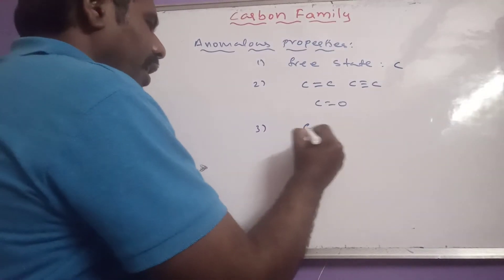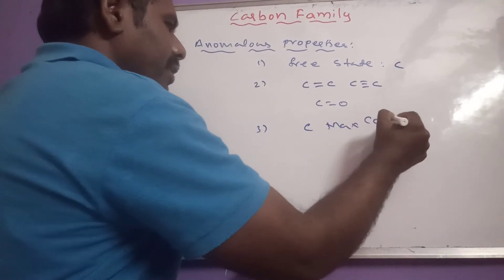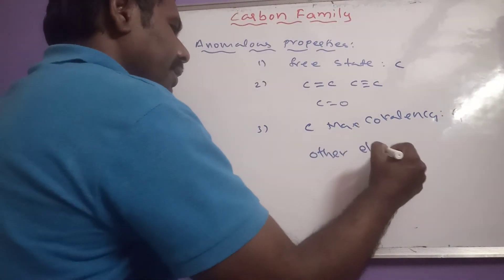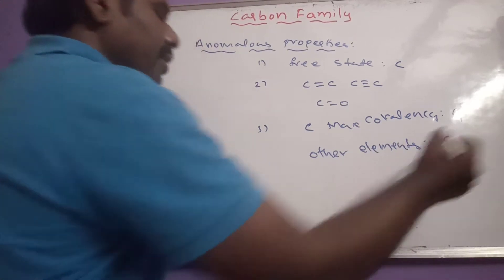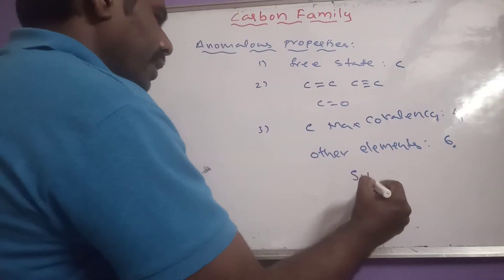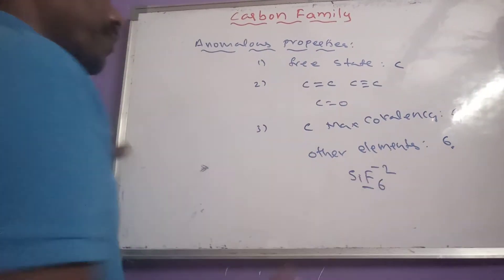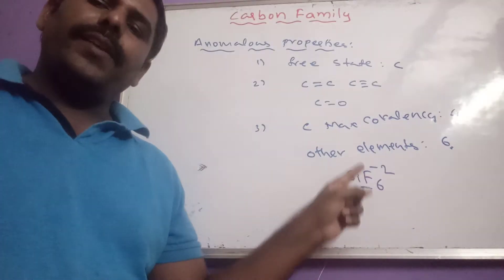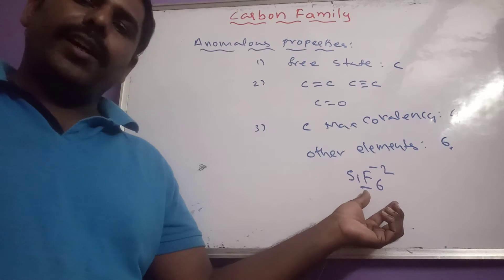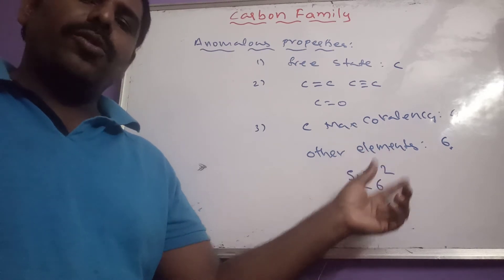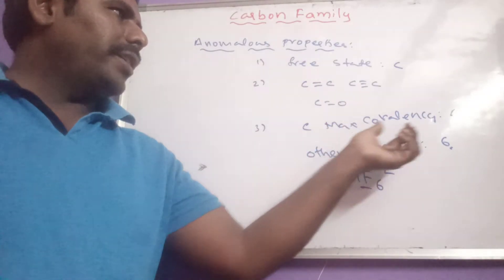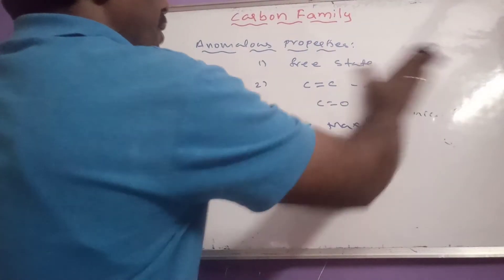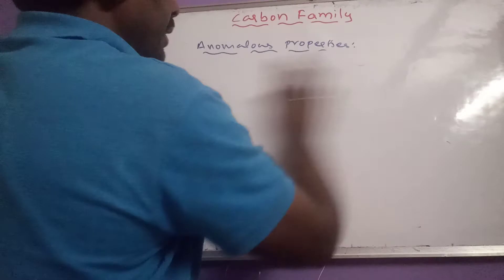Another anomalous property: the maximum covalency of carbon is 4. But other 4th A group elements exhibit a maximum covalency of 6. For example, silicon forms SiF6²⁻ by expanding its octet. Due to the presence of vacant d-orbitals in other elements, maximum covalency increases to 6, but in carbon the maximum covalency is only 4.